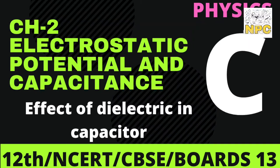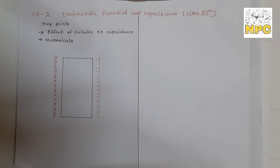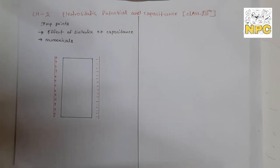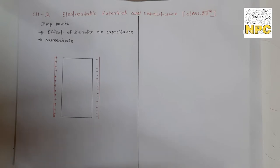Hello everyone, this is Tripti. Welcome back to NBC, the channel where you can learn all the concepts of physics. Now we move on to the next and last topic of this chapter - Electrostatic Potential and Capacitance - which is all about the effect of dielectric on capacitance. We'll also cover two or three numerical examples based on this concept.